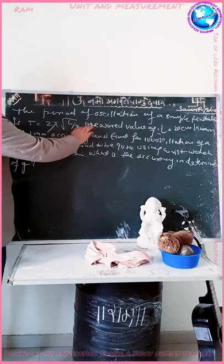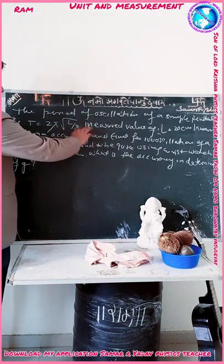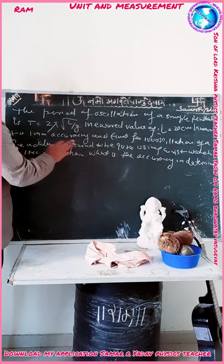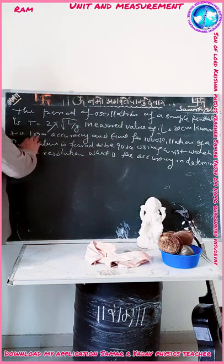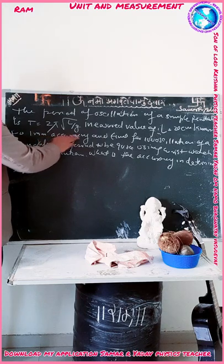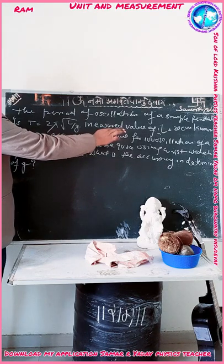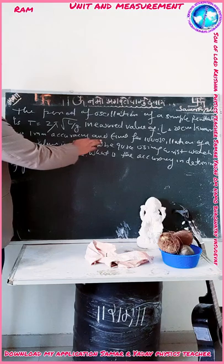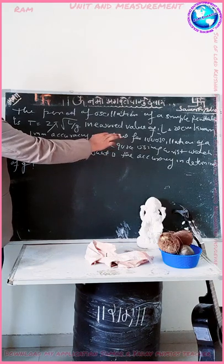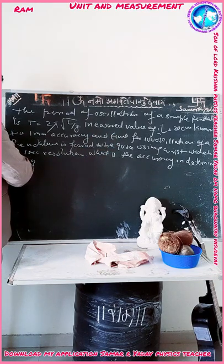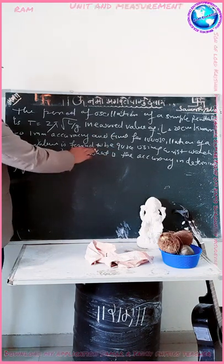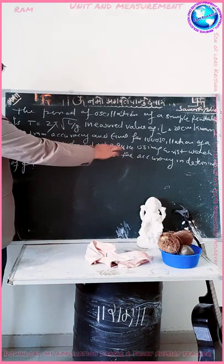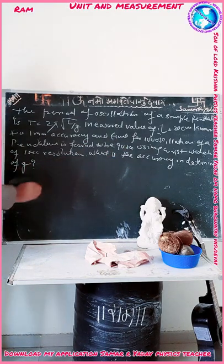The period formula is T = 2π√(L/G), where the measured value of L is 20 cm, known to 1 mm accuracy. The time for 100 oscillations of the pendulum is found to be 90 seconds, using a wristwatch of 1 second resolution. What is the accuracy in the determination of small g?